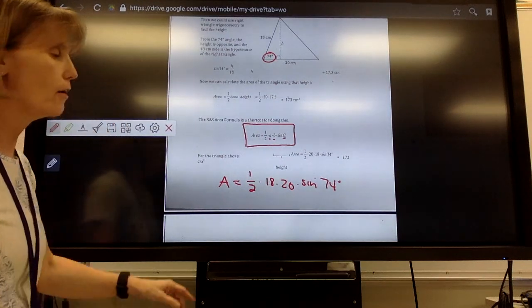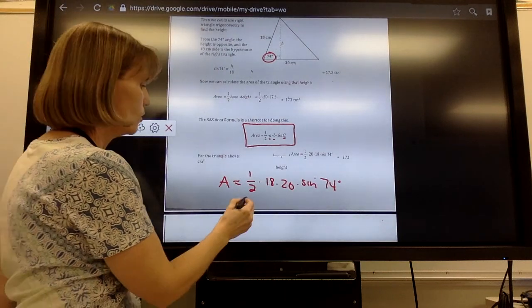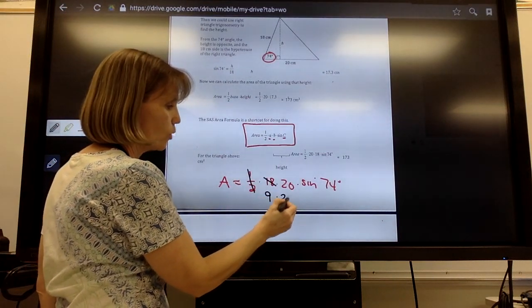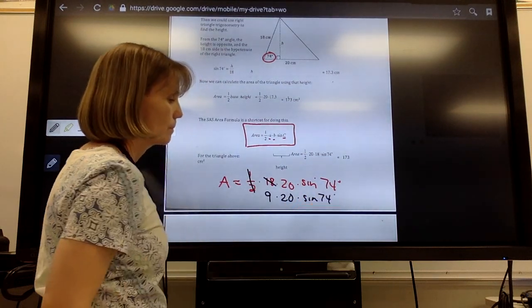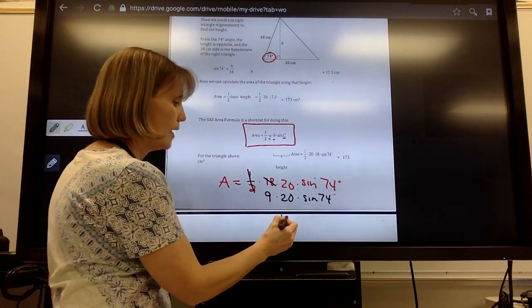So you're going to use your calculator, and you're going to take one-half times 18. And once I do that, one-half times 18 is 9 times 20 times the sine of 74 degrees. When you take nine times 20, you're going to get 180.